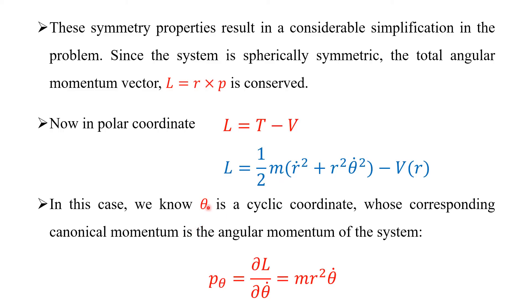Since we already know theta is a cyclic coordinate, by definition, the angular momentum due to theta — P sub theta — is equal to the partial derivative of the Lagrangian with respect to theta-dot. The Lagrangian has theta-dot terms but no theta terms. There are also R and R-dot terms. M is the constant mass.